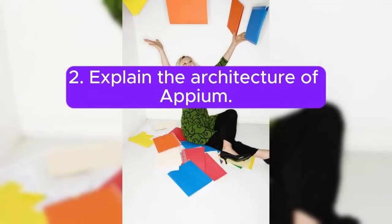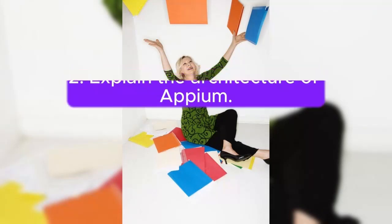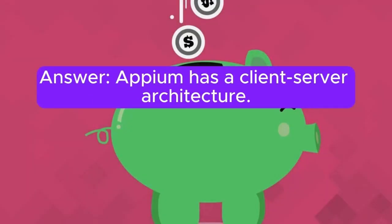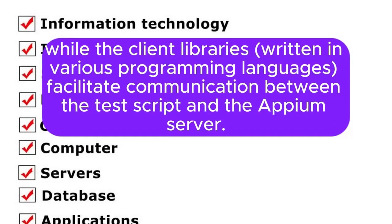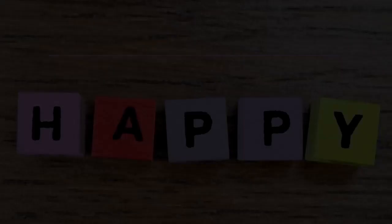2. Explain the architecture of Appium. Appium has a client-server architecture. The Appium server is responsible for receiving commands and interacting with the mobile device, while the client libraries written in various programming languages facilitate communication between the test script and the Appium server.